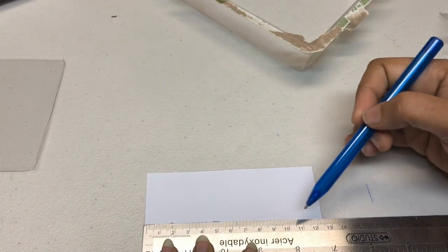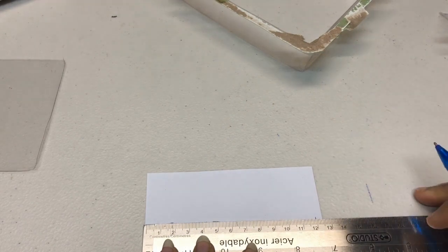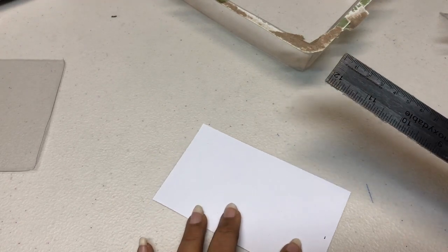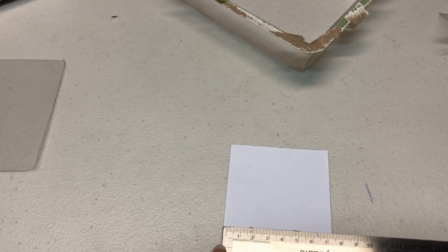Now we're going to make a template with white paper. Take a sheet and mark 12 centimeters. Then turn your sheet and mark again 7 centimeters.